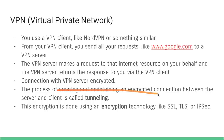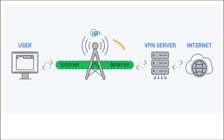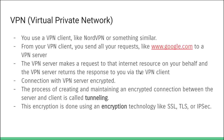The process of creating and maintaining an encrypted connection between client and VPN server is called tunneling. There's a heavily encrypted connection between the user and the VPN server, and that process of passing encrypted data through is called tunneling. The encryption is done using technologies like SSL, TLS, or IPSec — all very secure technologies.